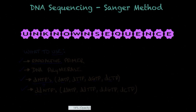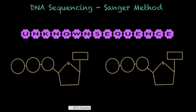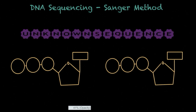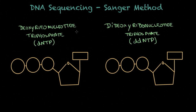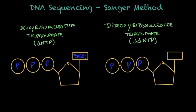I want to compare the dNTPs with the ddNTPs. I have here two drawings of nucleotides so I can exactly compare them. The deoxyribonucleotide triphosphate has three phosphates, and in the dideoxyribonucleotide triphosphate we also have three phosphates. The bases on both can be adenine, guanine, cytosine, and thymine.